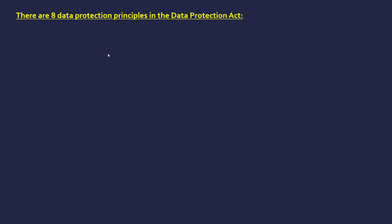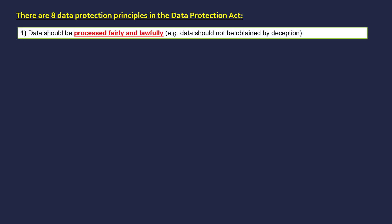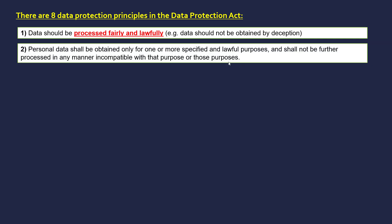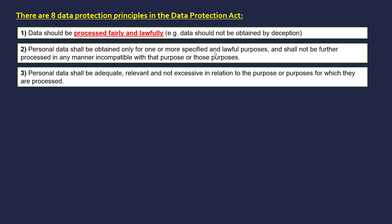There are eight data protection principles in this act, and I've highlighted the important bits. The data should be processed fairly and lawfully — so they shouldn't collect data by deception. The second point is basically that they can't change the original purpose to make it illegal. The third point is that the data should not be excessive in relation to the purpose — they shouldn't collect data which has no relevance to their original purpose or the business they are doing.